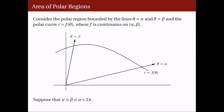I will now discuss how to find the area of polar regions, that is, the regions bounded by polar curves. In the following figure, the polar region is bounded by the lines theta equals alpha, theta equals beta, and by the polar curve r equals f of theta, where f is a continuous function of theta over the closed interval alpha to beta. Suppose also that alpha is not larger than beta and that beta is not larger than alpha plus 2pi.